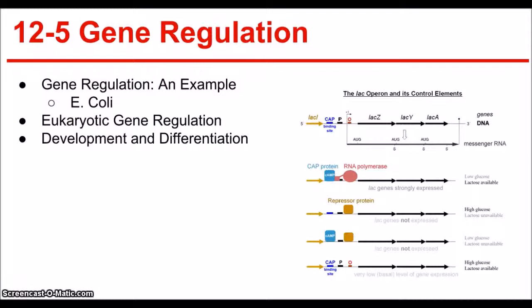Eukaryotic gene regulation: Most eukaryotic genes are controlled individually and have regulatory sequences that are much more complex than those of the lac operon genes. The genes are regulated in a variety of ways by enhancer sequences located before the point at which transcription begins.